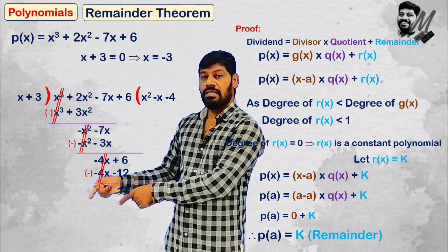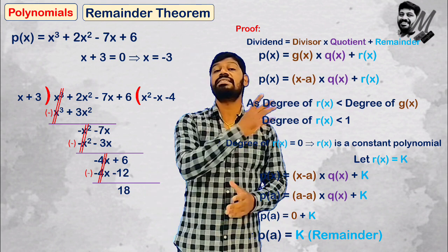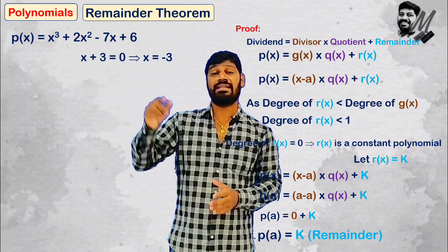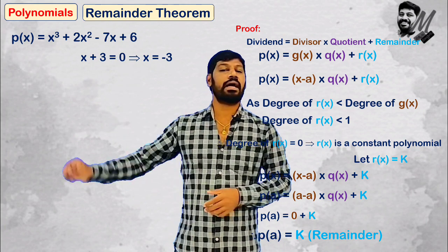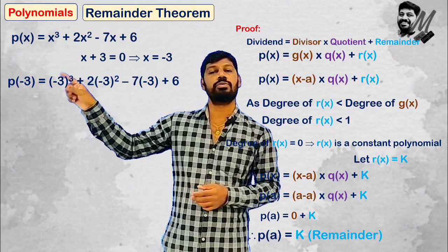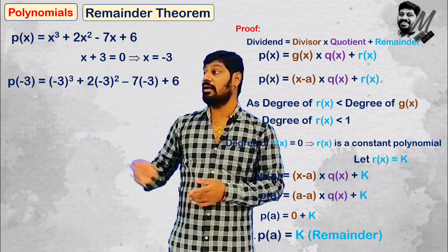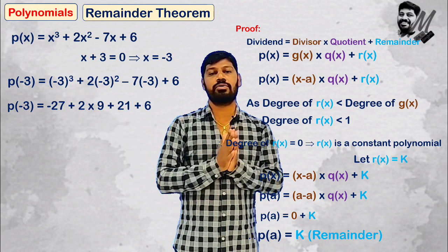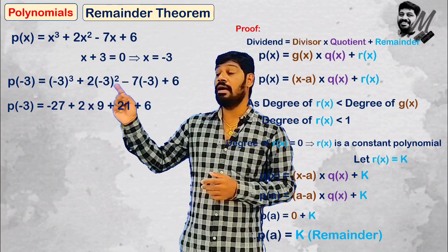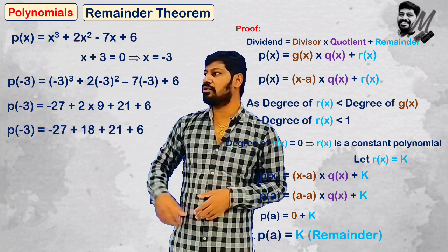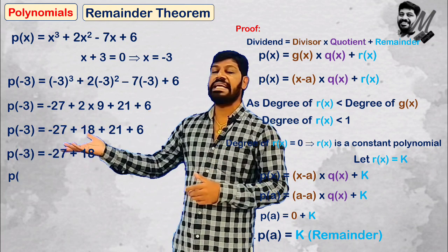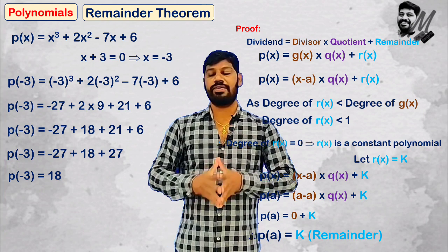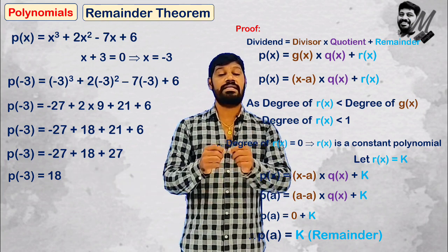The bottom line: the remainder is 18. Using the Remainder Theorem, we can do this instead of long division. So x plus 3 equals 0 means x equals minus 3. Now P of minus 3 is equal to minus 3 whole cubed plus 2 into minus 3 squared minus 7 into minus 3 plus 6, which gives minus 27 plus 18 plus 21 plus 6 — so the remainder is 18.